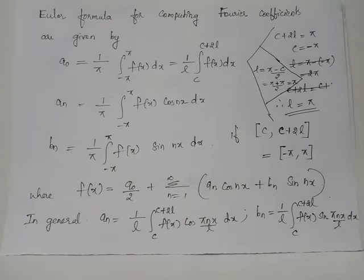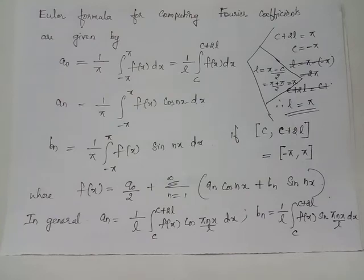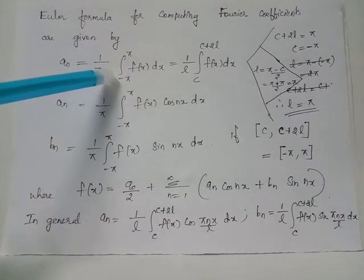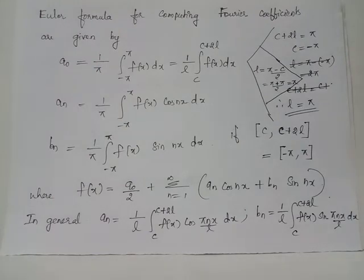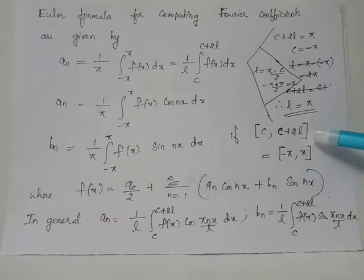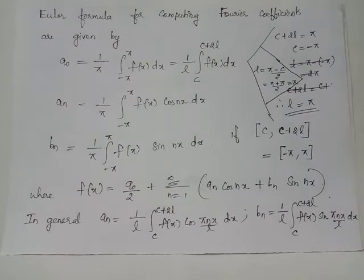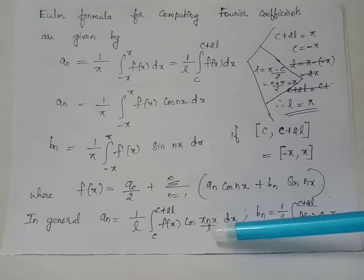When f(x) is defined for the interval [−π, π], we have a₀ equals 1/π times the integral from −π to π of f(x) dx, because l = π, the upper bound is π (equals c+2l), and the lower bound is −π (equals c). Similarly, aₙ equals 1/π times the integral from −π to π of f(x) cos(nx) dx. The general formula for aₙ is 1/l times the integral from c to c+2l of f(x) cos(πnx/l) dx, which reduces to cos(nx) when l = π.